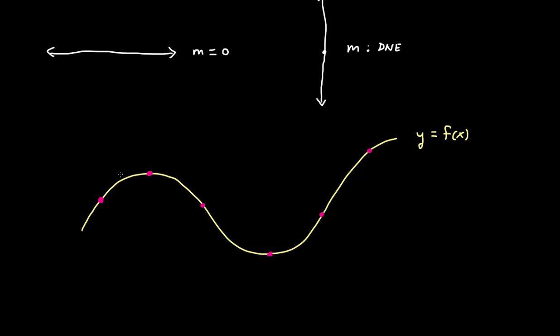So the slope is always changing when you have a curvy function. To describe the slope in calculus, we often draw what's called a tangent to the function. A tangent line means it's touching the curve at one point. This tangent line has the traditional sense of a slope — and here the slope is positive. The slope of the tangent line at this pink point is equal to the slope of the function at that point.